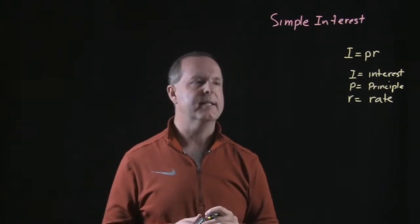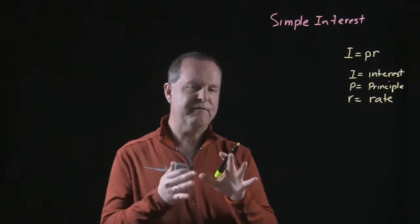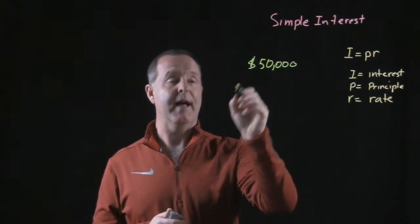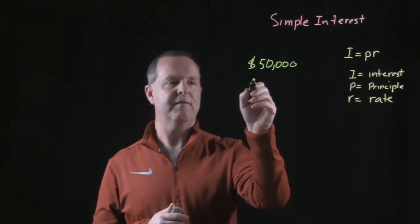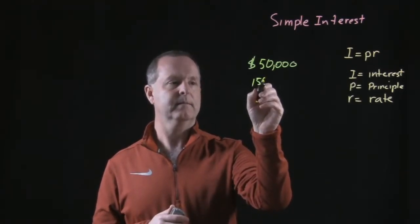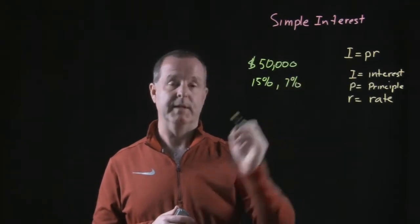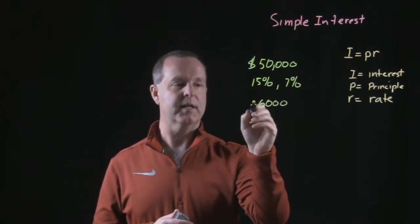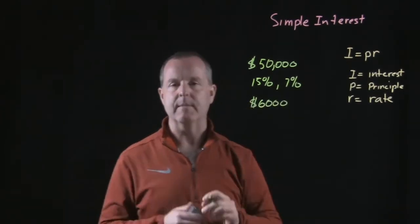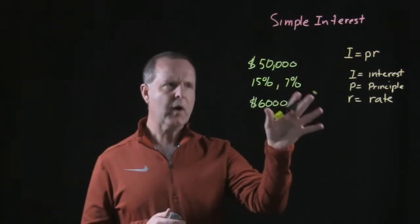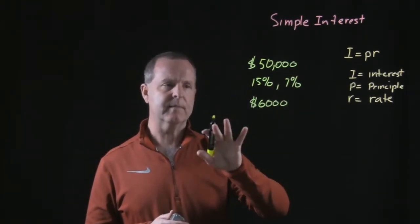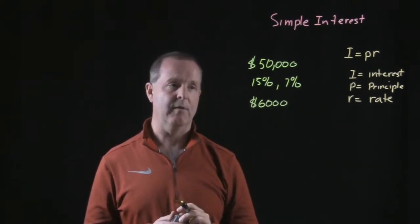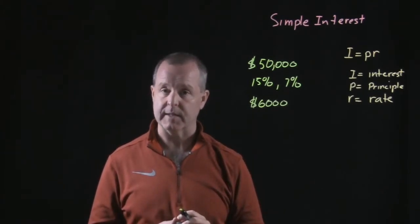So my mom called me up the other day and said, Willie, I got $50,000 that I need to invest. My options are a 15% option and a 7% option. And what I need to have is $6,000 in interest a year in order to meet my needs. So how can we use systems to find out how much money to put into each of those different investment accounts in order to get the yield that we're interested in?